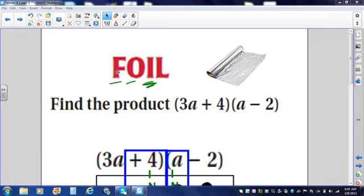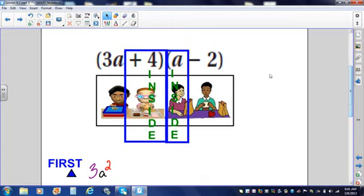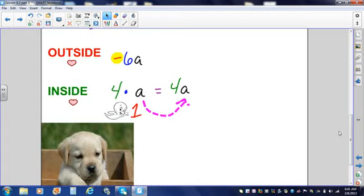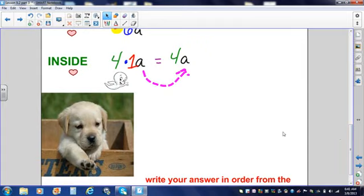I've done F first. O, outside. I is going to stand for the inside. So, my plus 4 and my a are on the inside of the cafeteria table. Plus 4 and a are on the inside. These guys were on the outside. So, I'm going to multiply positive 4 and a. There is an invisible coefficient of 1 here. Another ghost. 4 times 1 gives me 4. And, my variable a is like that dog that follows you everywhere you go.